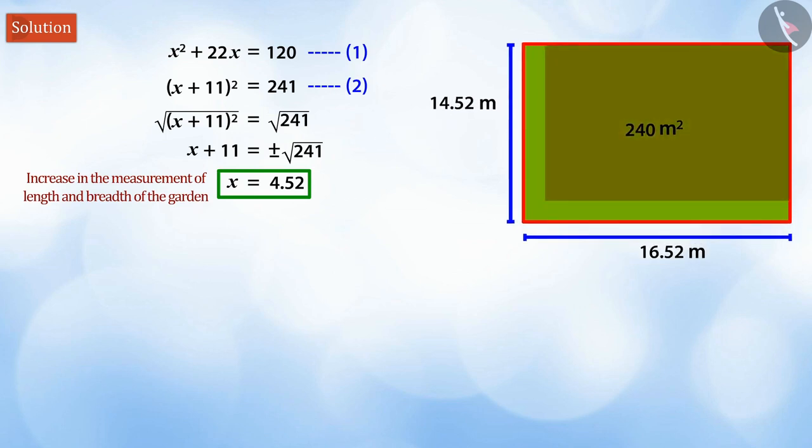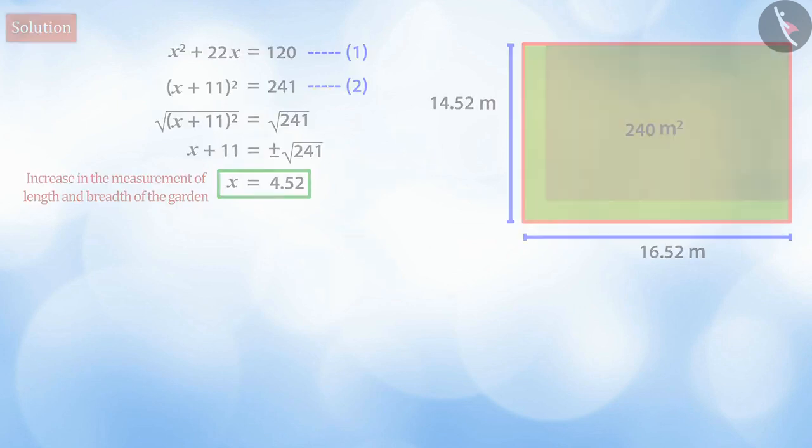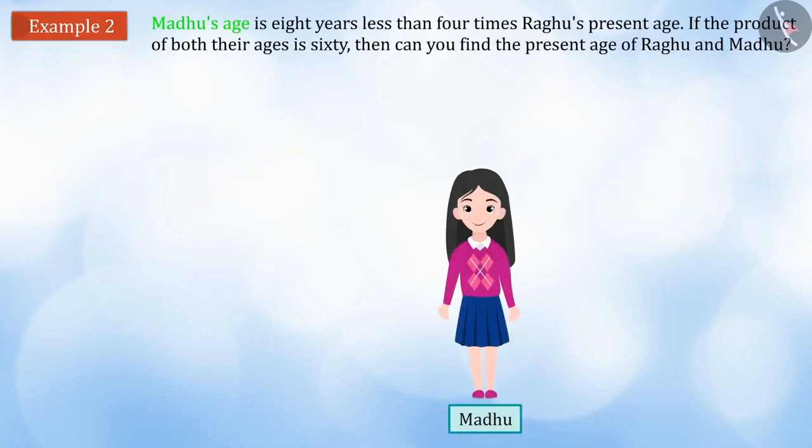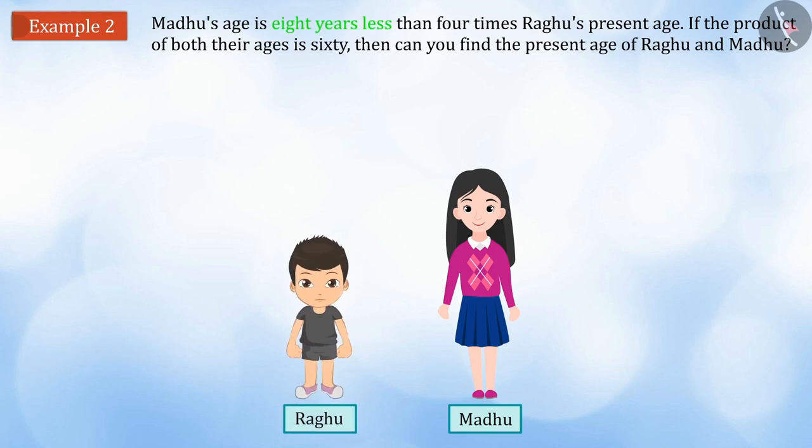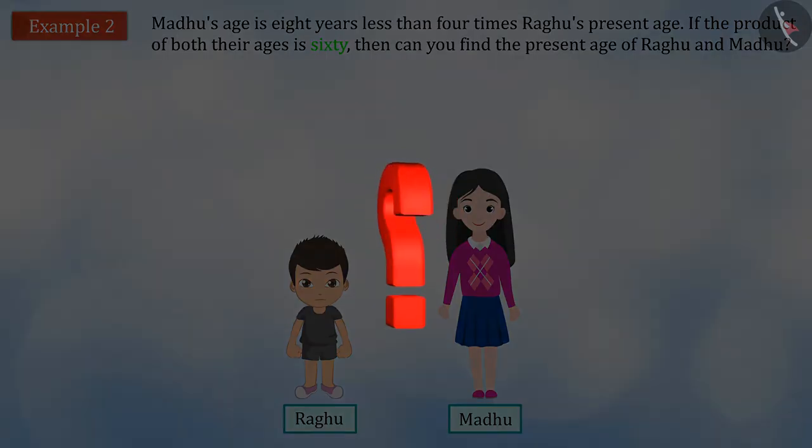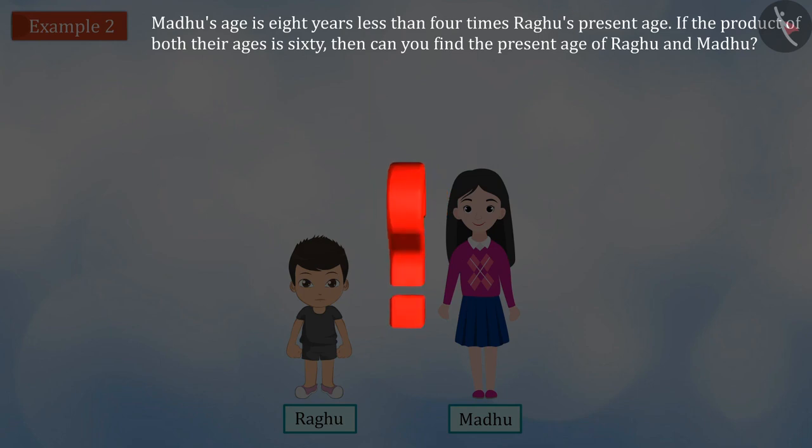Let us look at another example. Madhu's age is 8 years less than 4 times Raghu's present age. If the product of the ages is 60, then can you find the present age of Raghu and Madhu?